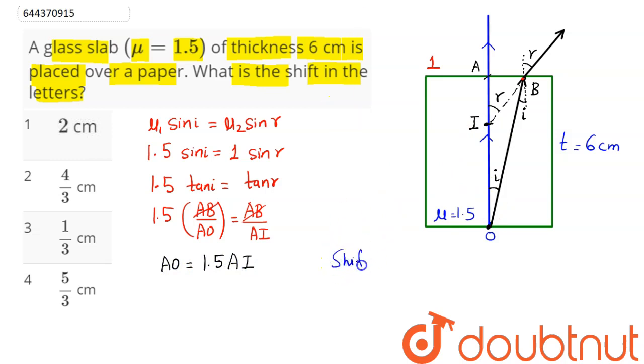Now we have AO as the thickness of the slab, which is 6 centimeters, and AI we need to find. So this is 6, this here is 3/2 of AI.